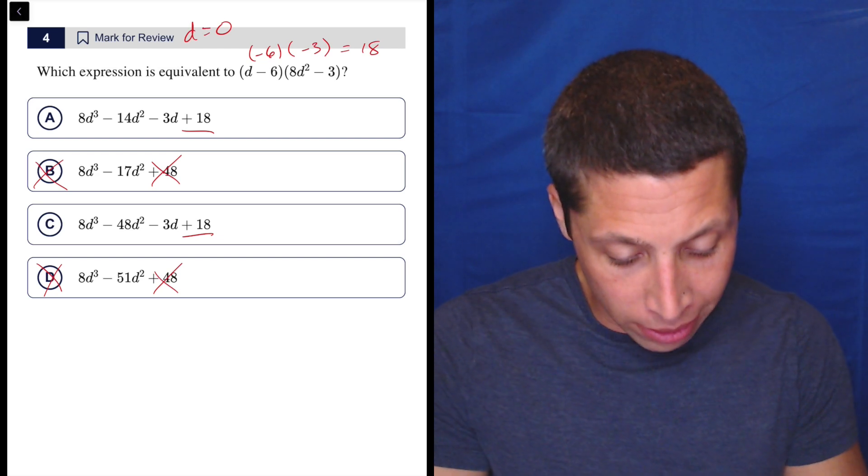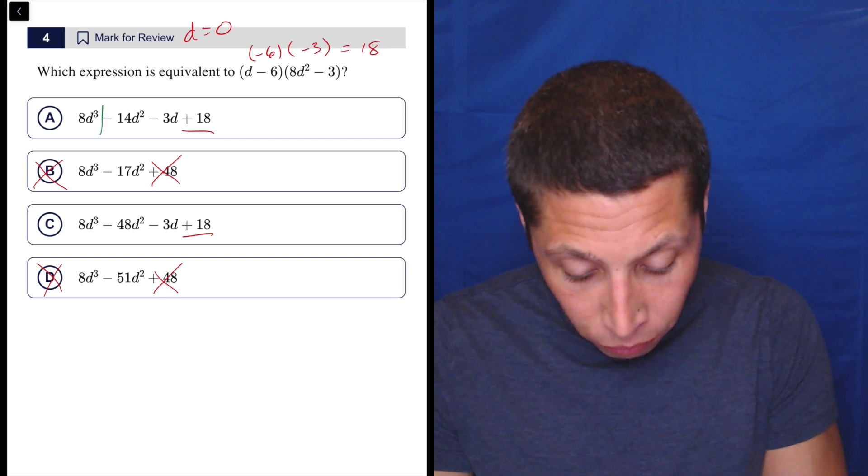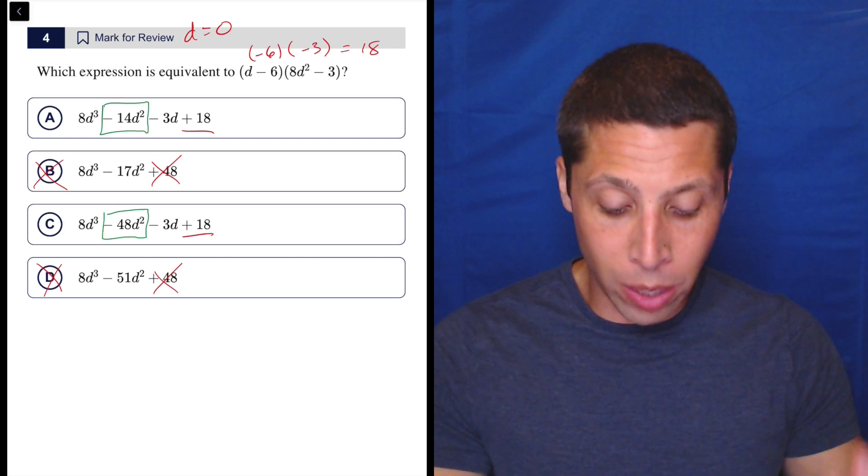So now if I look at this though, let's see what we've got going on. The choices A and C are very similar. In fact, the only difference is right here: negative 14d² or negative 48d².